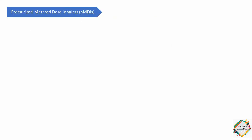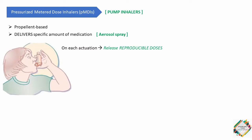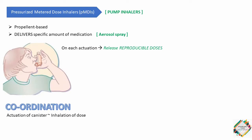First, we are going to talk about pressurized metered dose inhalers, also referred to as pump inhalers. This is the most commonly used inhaler device. They are propellant-based and deliver a specific amount of medication to the lungs in the form of an aerosol spray, releasing reproducible doses every time on actuation. These inhalers do not depend on the patient's inhalation to trigger drug release — they require coordination between actuation of the canister and inhalation of the dose.